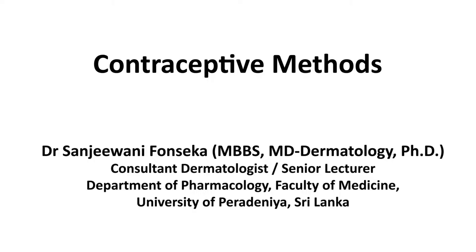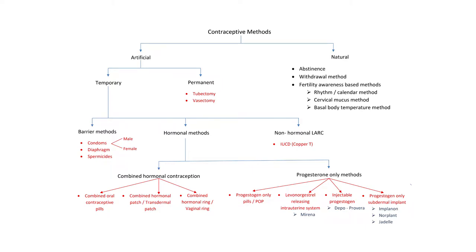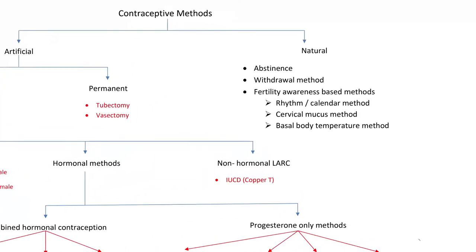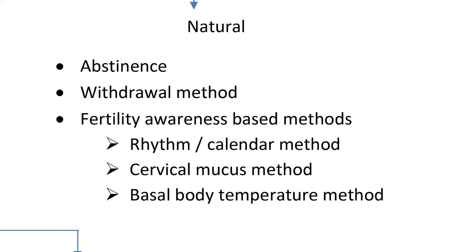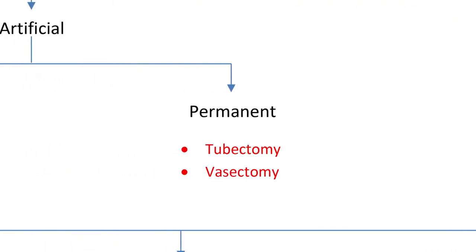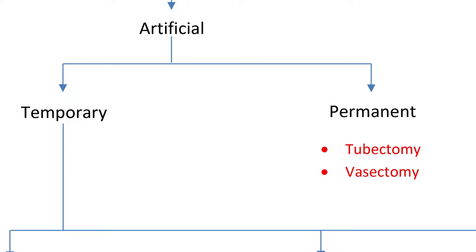Contraceptive methods. Contraception is the deliberate prevention of pregnancy by artificial or natural means. Contraceptive methods can be classified as artificial and natural methods. Natural methods include abstinence, withdrawal method, and fertility awareness-based methods, which include the rhythm or calendar method, cervical mucus method, and basal body temperature method. Under artificial methods there are temporary and permanent methods. Permanent methods include tubectomy and vasectomy.